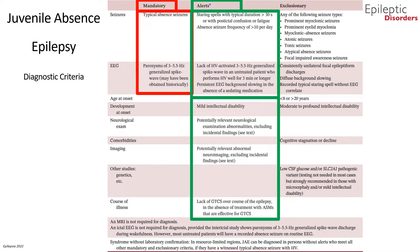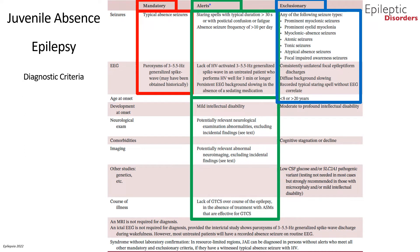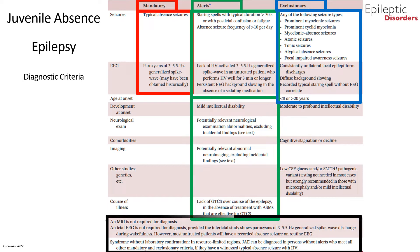Additional alerts include mild intellectual disability at onset, relevant neurological examination abnormalities, abnormal imaging findings, and a course of illness showing a lack of generalized tonic-clonic seizures. Exclusionary criteria pointing against juvenile absence epilepsy include seizure types other than typical absence seizures, EEG findings showing consistent focal discharges, diffuse background slowing, or a recorded staring spell without EEG correlate. An age at onset less than 8 or greater than 20 years should also suggest an alternate diagnosis.